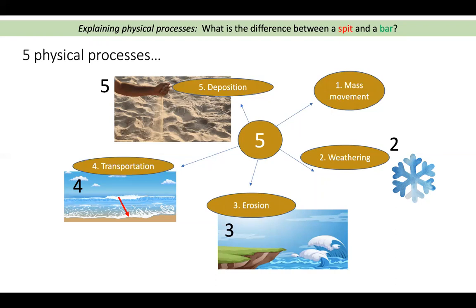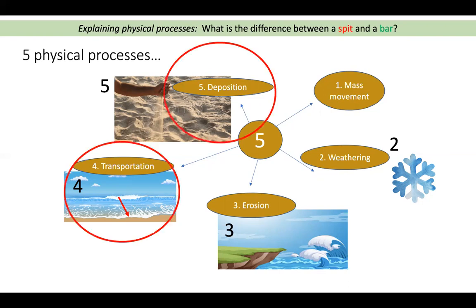Those are the five key physical processes. Today we're looking at two coastal landforms — a spit and a bar — and specifically we need to be thinking about transportation and deposition.